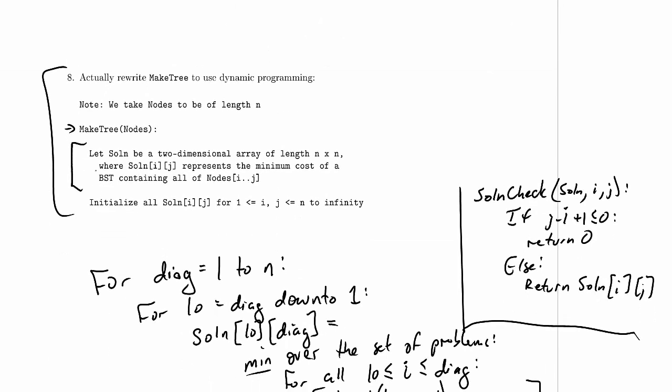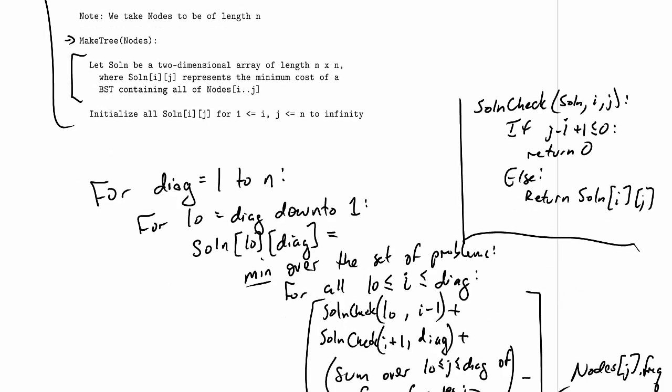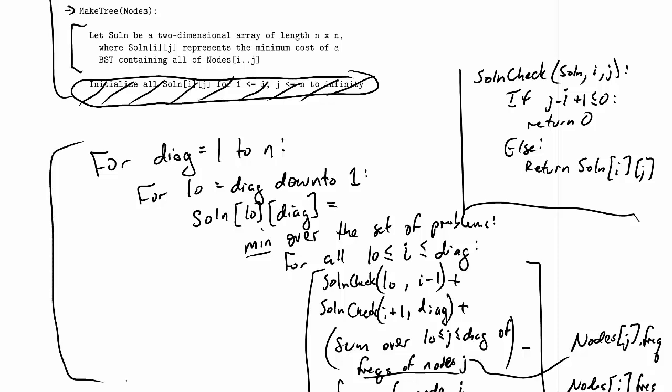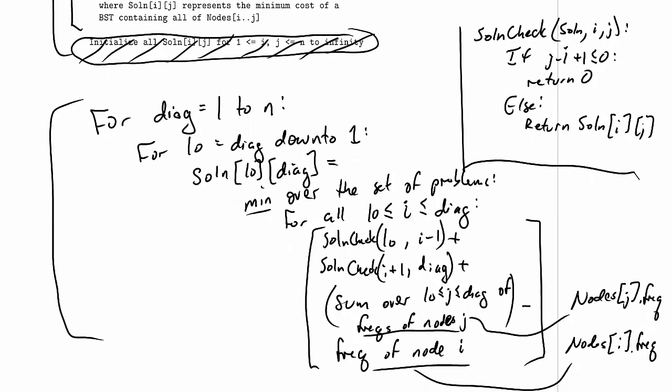And then I initialize solution to be a two-dimensional array of length n by n, where solution i j represents the minimum cost of a BST containing all of nodes i up to j, which is just how I'm using it down below, so that's all fine. I initialize all solution i j for 1 less than or equal to i j less than or equal to n to infinity. It turns out this line is really totally unnecessary the way we've worked things through. It doesn't cause any harm, but we don't need it because we handle initializing each entry in the solution matrix. And then this is our whole dynamic programming solution. It's quite small, quite tight, and easy to work through.